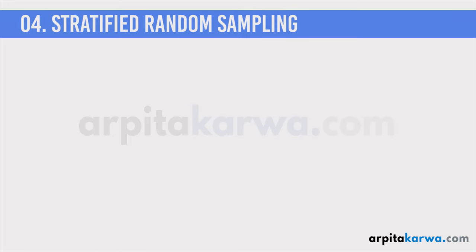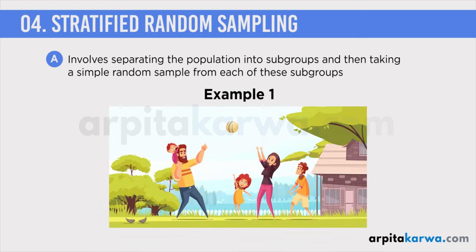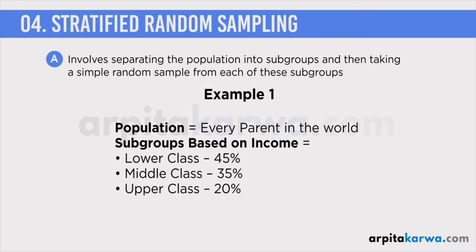Next in line is stratified random sampling. Stratified random sampling involves separating the population into subgroups and then taking a simple random sample from each of these subgroups. For example, suppose you want to research how many hours parents spend with their kids every week. The population would consist of all the parents in the world. Since it is not possible to speak to every parent, you decide to use stratified random sampling.